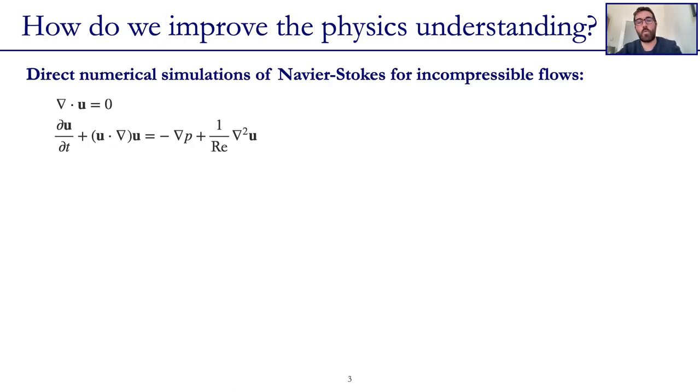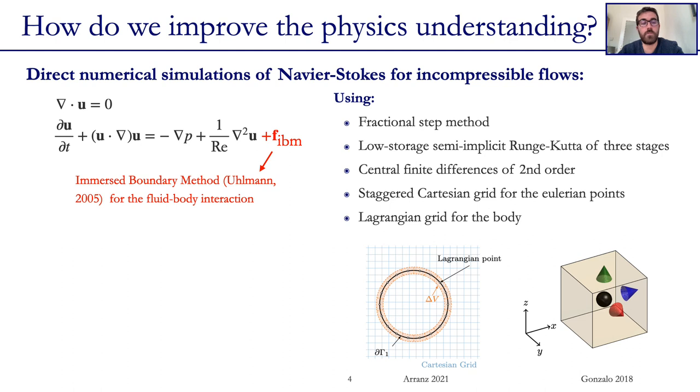How do we do this? Well, basically we perform direct numerical simulations of the incompressible Navier-Stokes equations, accounting for the fluid-body interactions using the inverse boundary method proposed by Ullmann. We use the fractional step method, low-storage semi-implicit Runge-Kutta of three stages, central finite differences of second order, staggered Cartesian grid for the Eulerian points, and Lagrangian grid for the body.